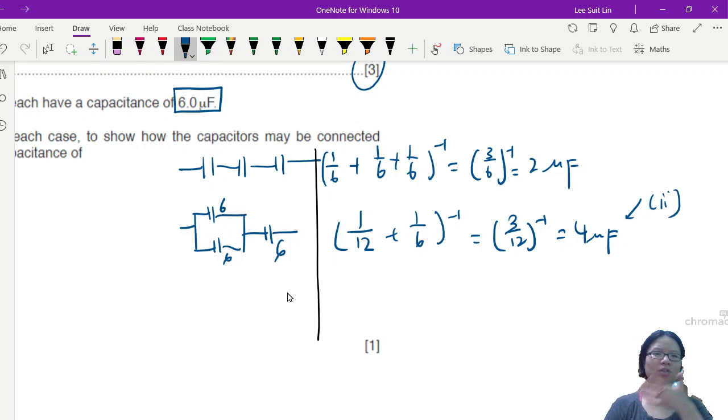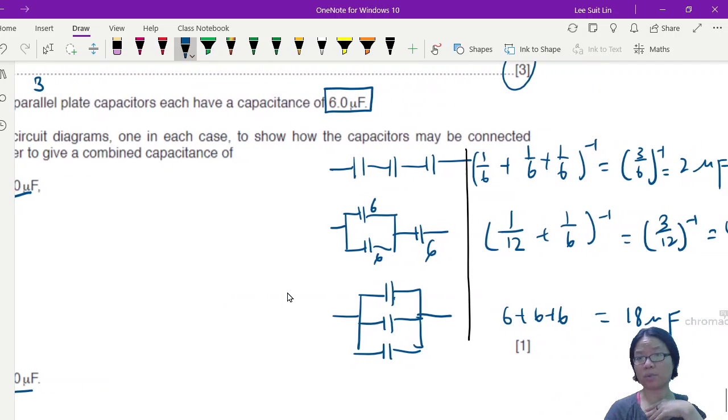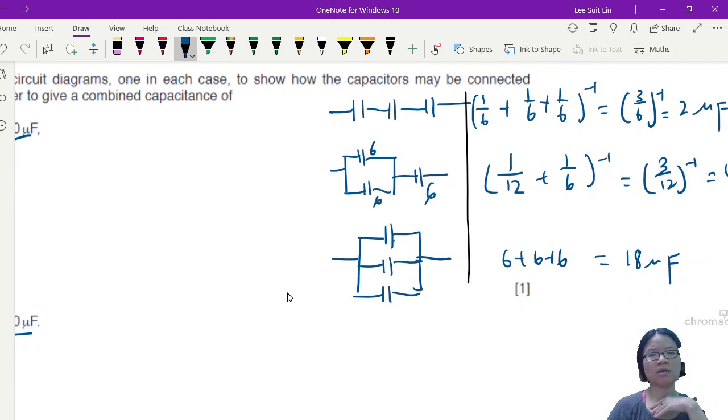Okay, what are the other options? I guess you could be thinking maybe we can do parallel like this. Okay, can, no problem. But if you connect this way, this is actually six plus six plus six. Not a nice number, this one. But it's 18 microfarad, which is not what they want. They wanted nine.